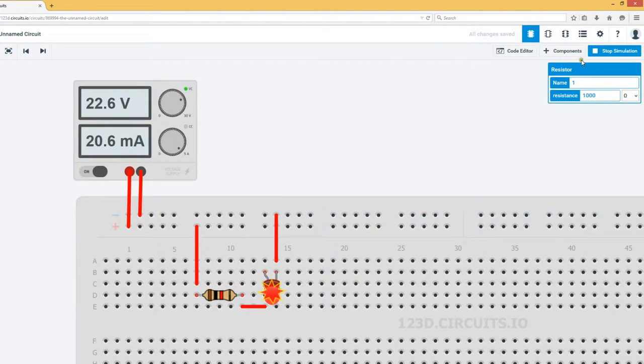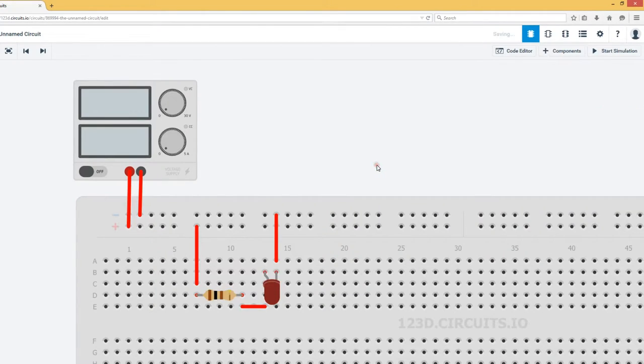So what if we change our circuit and instead of a 1000 ohm resistor, we've only got a 100 ohm resistor. Does that make much of a difference?